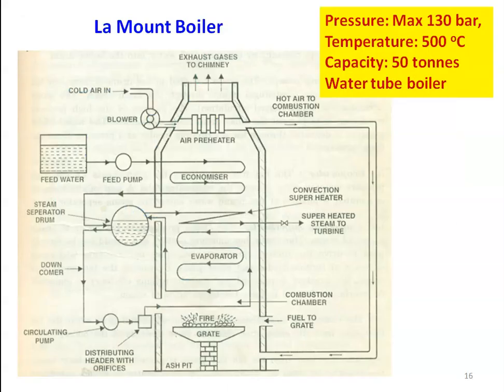The next type of boiler is the Lamont boiler. It is a high pressure water tube boiler. The maximum pressure is 130 bar and the temperature is 500 degrees Celsius. The capacity is around 50 tons. Take a few seconds and look at the construction of the Lamont boiler.